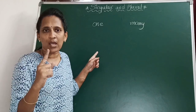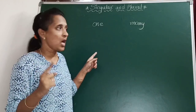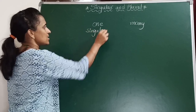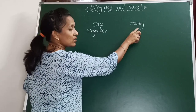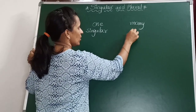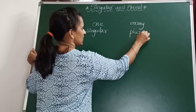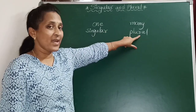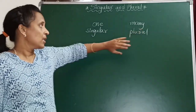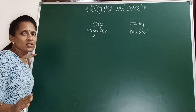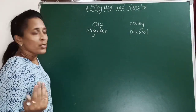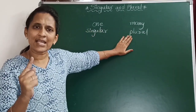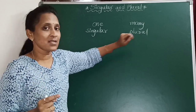If we are talking about one noun, it is called singular. And if we are talking about many nouns, it is called plural. If there is one noun, we say it as singular. And if there are many, we say it as plural. Now, most of the nouns, to change from singular to plural, we use only S. We use S to make it plural.